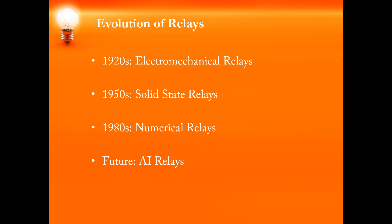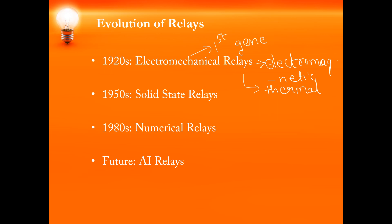The first relay was introduced in the 1920s, which was electromechanical type. Electromechanical means it was mainly of two types: one is electromagnetic type and the other one was thermal type. So the first generation relays — these electromechanical relays — were categorized as the first generation relays. They are mainly classified as electromagnetic and thermal type.